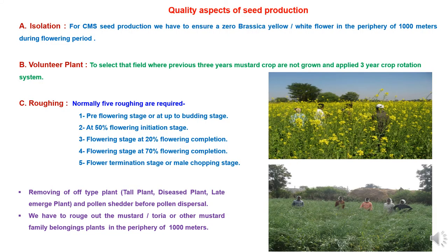Regarding quality aspects of seed production: in CMS-based hybrid seed production of mustard, critical factors include isolation distance management — a minimum isolation distance of 1000 meters must be maintained, ensuring zero Brassica yellow, white flower, or red seed mustard in the periphery of 1000 meters from the hybrid seed production field. For volunteer plant management, select fields where the previous season's mustard crop was not grown, with a compulsory three-year crop rotation, as mustard has very small seeds that may persist in the field for a long time.